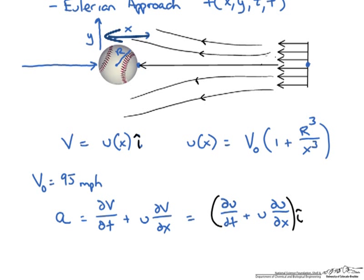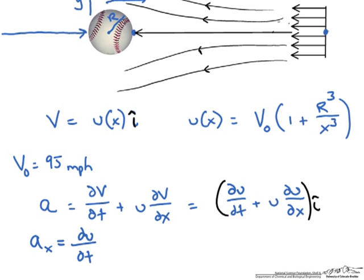This can be rewritten in vector format as the following, where we have the differential of the x component velocity with respect to time plus the velocity in the x direction times the differential of that velocity with respect to x. So we could write this in just terms of the x component of acceleration, and it pretty much looks like the same thing.